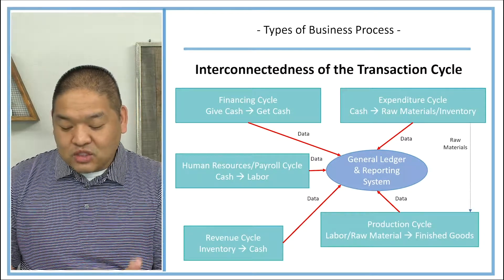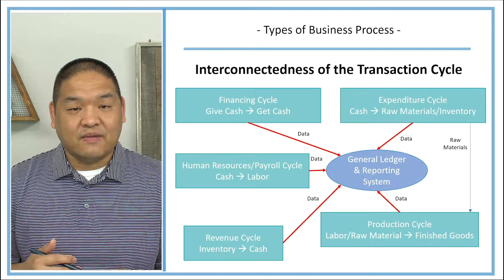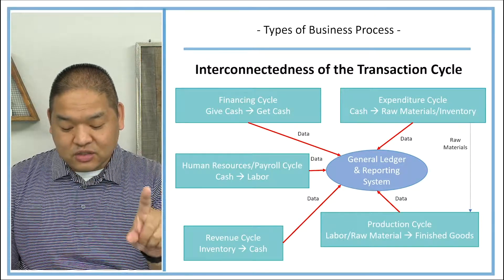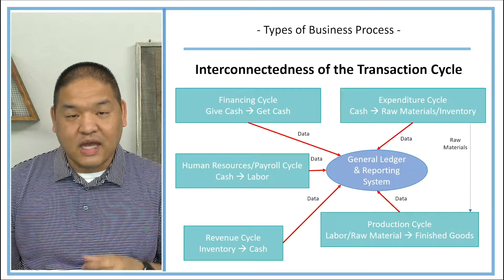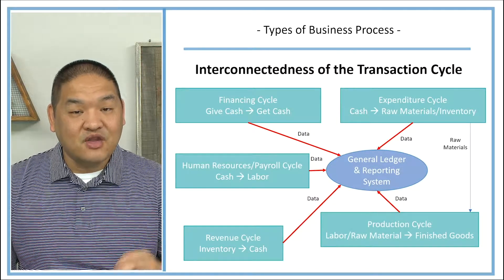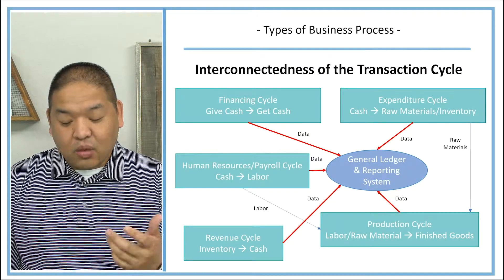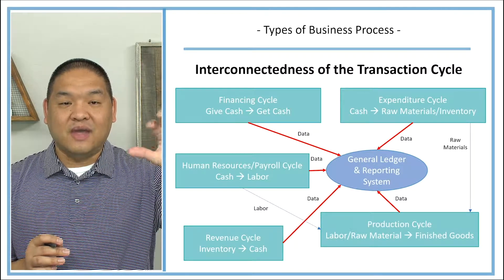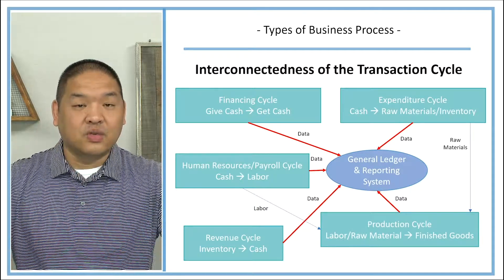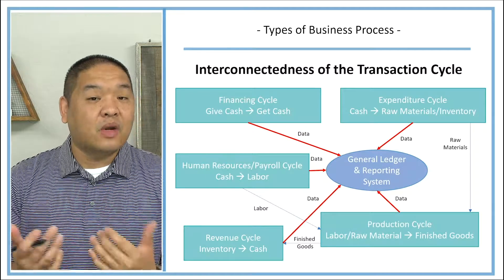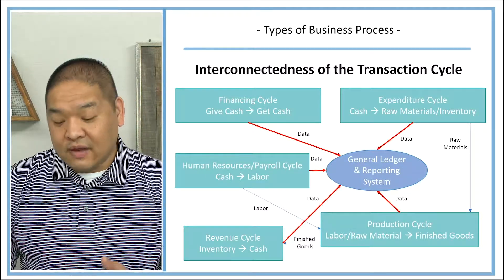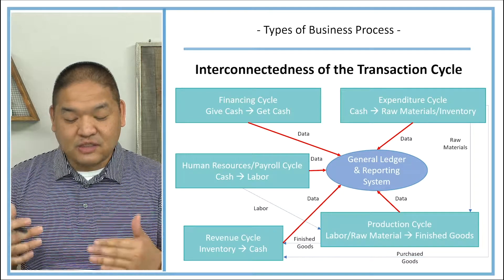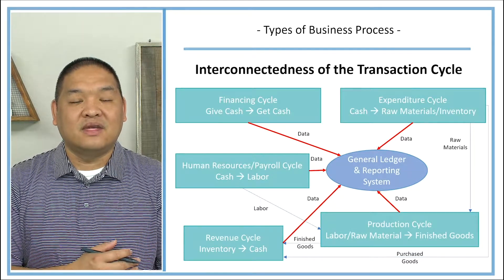If we have a manufacturing organization, we obtain raw materials through the expenditure cycle and bring them into the production cycle to manufacture finished goods. We also need labor, which comes from the human resources or payroll cycle. If we're a retailer rather than a manufacturer, we may not have raw materials or labor in that sense — instead, we buy inventory through the expenditure cycle and sell it through the revenue cycle.